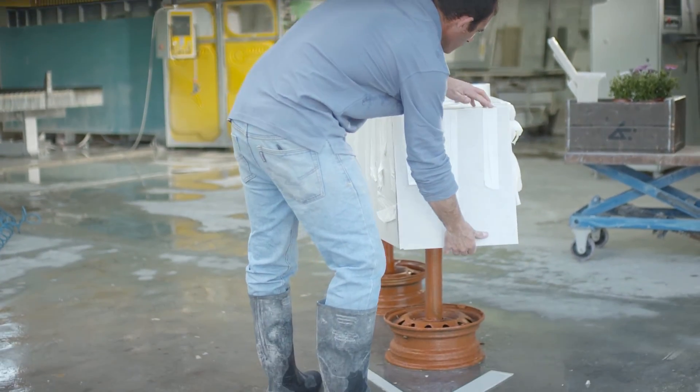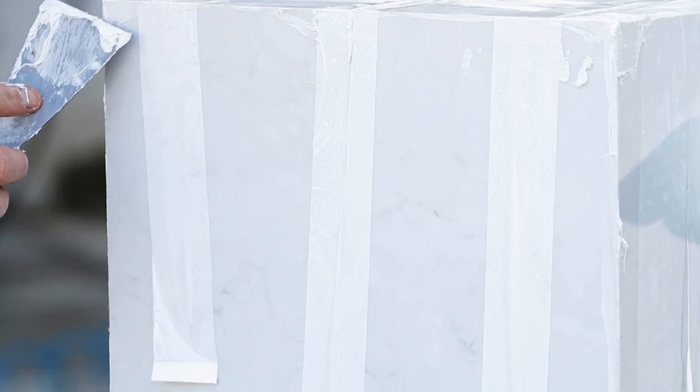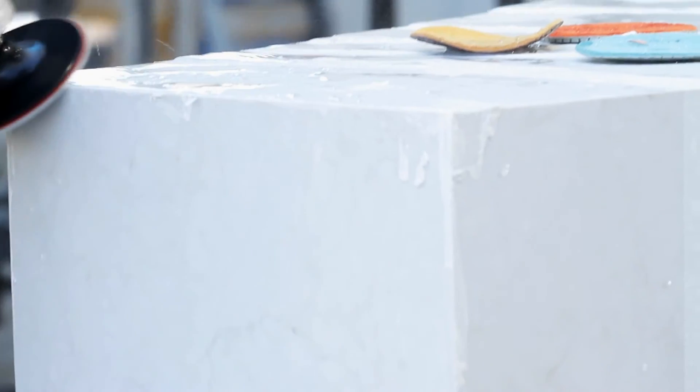Now, glue the last two pieces, which do not require thermoforming, onto the coffee table so that it's sealed on all sides.